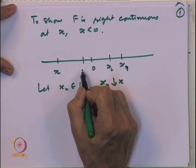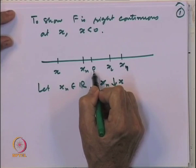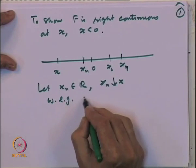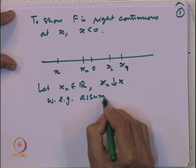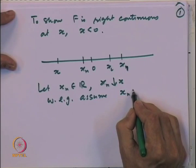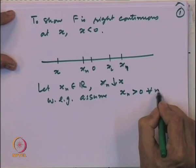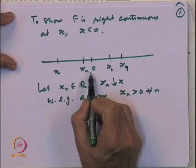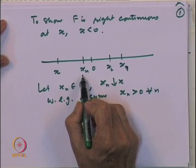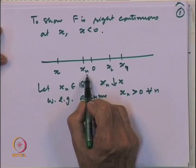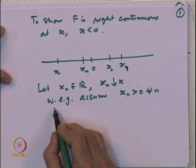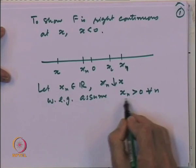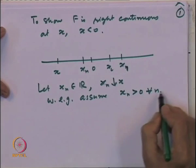Because x_n converges to x and x is less than 0, at some stage the sequence must cross over the value 0. So without loss of generality, we may assume that all x_n are less than 0 for every n, since we can start analyzing the sequence from the point where it crosses over.